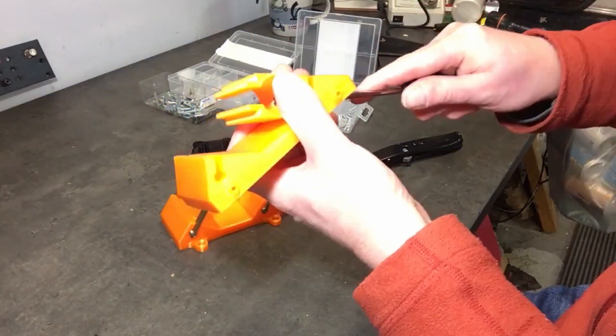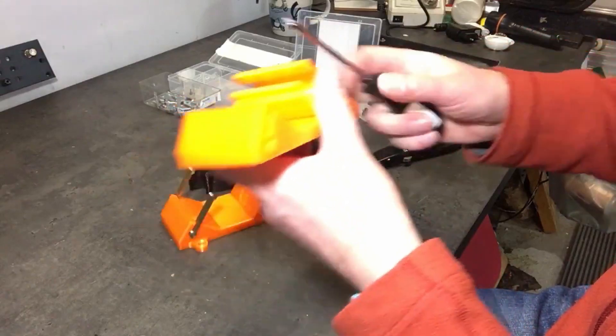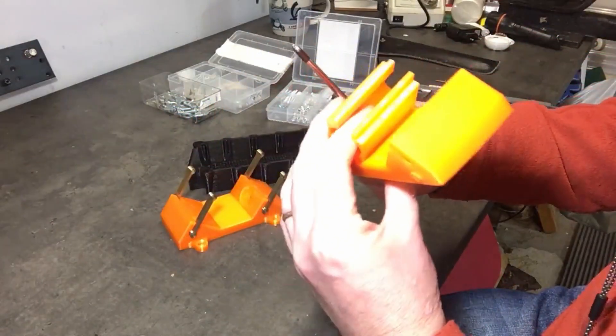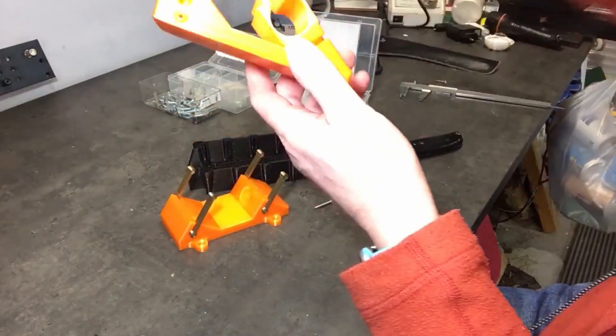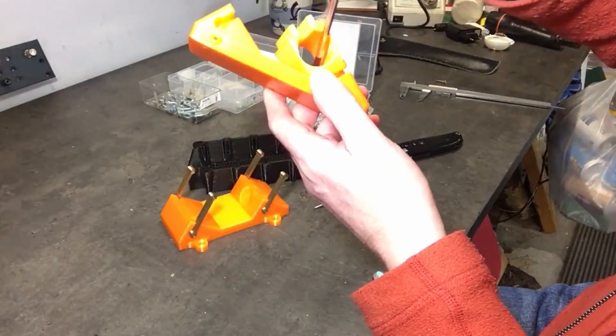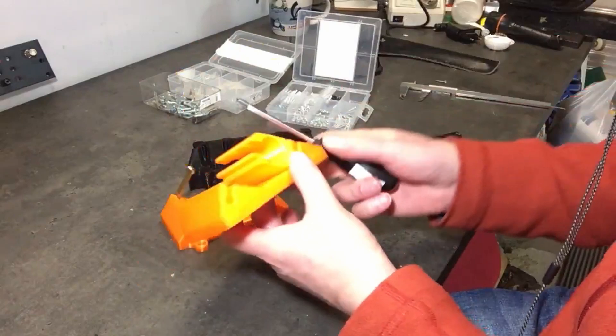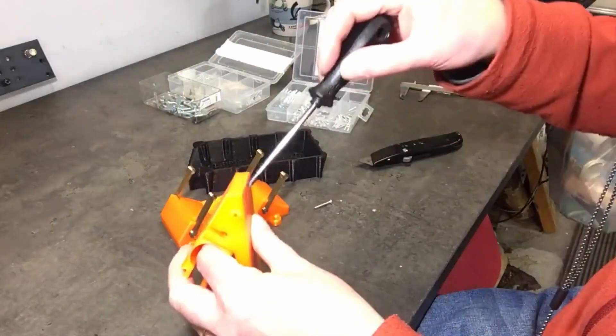Maybe I should have used some glue for this too, but since there's always a risk that I make mistakes, I'm not 100% sure that I don't have to disassemble this again. I think we need one more washer down here.